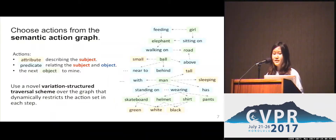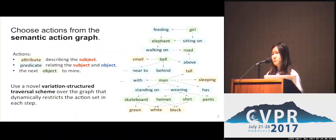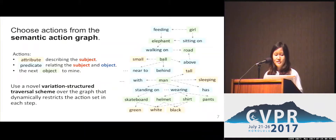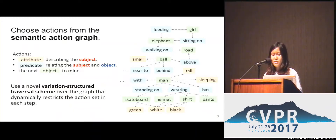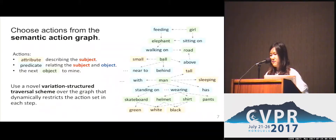The semantic action graph is a compact and highly informative representation of the semantic correlations between attributes, predicates, and objects. Our model uses a novel variation structured traversal scheme that dynamically restricts the action set in each step. Learning over the graph in this way allows the model to learn rare relationships from frequent ones using shared graph nodes.